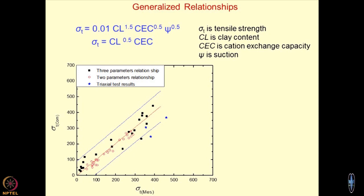And this is how we validated this equation. Equation number 1 and number 2 does not consist suction in it and it deals with only clay content and cation exchange capacity. What we have done is by using these equations, we have obtained the sigma t computed, and this sigma t measured is from the triaxial test. And we have shown that there is a good relationship between the experimentally obtained results from the triaxial testing, and both the equations yield good results.